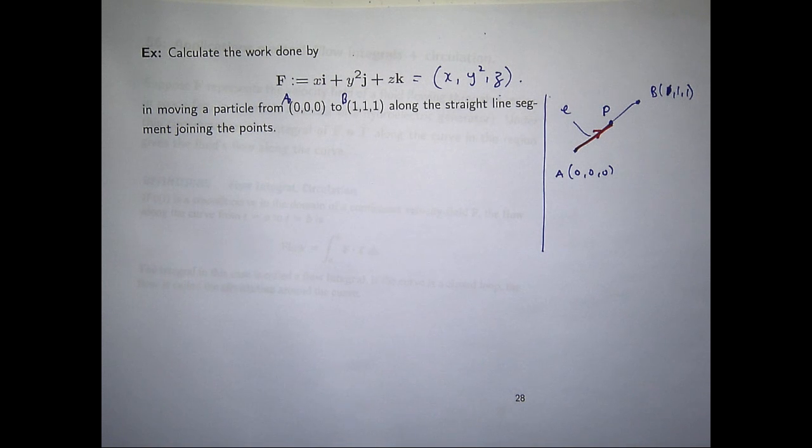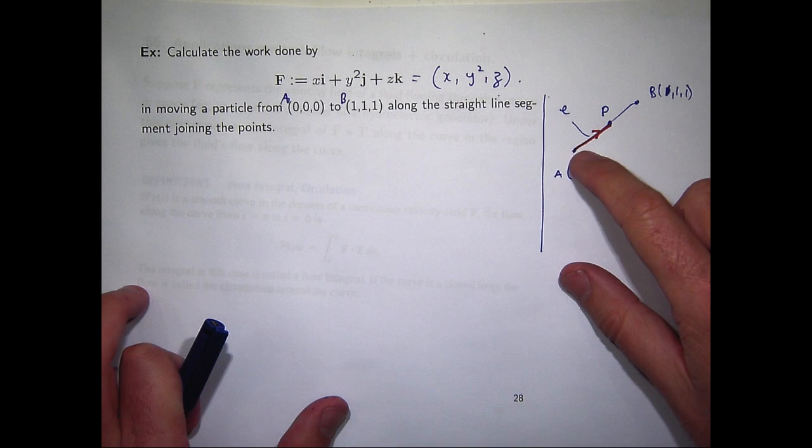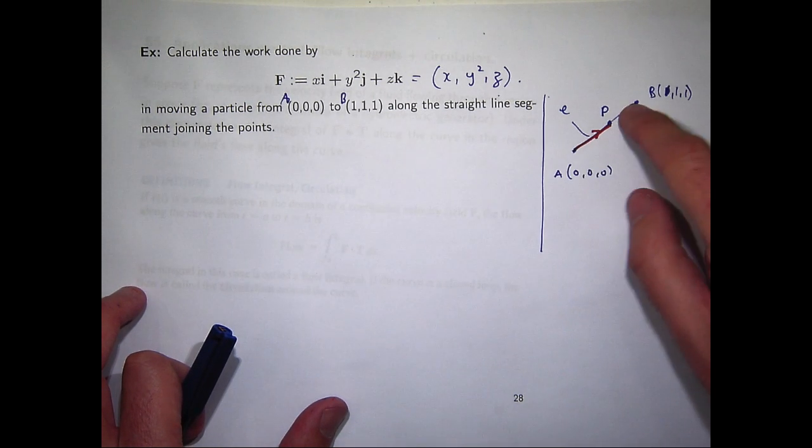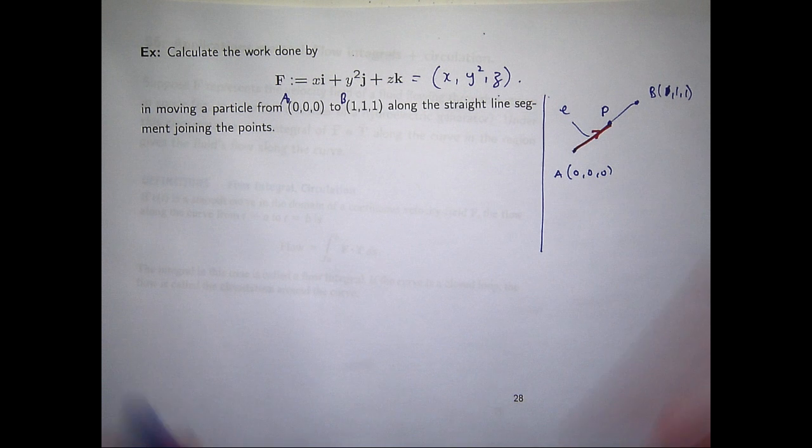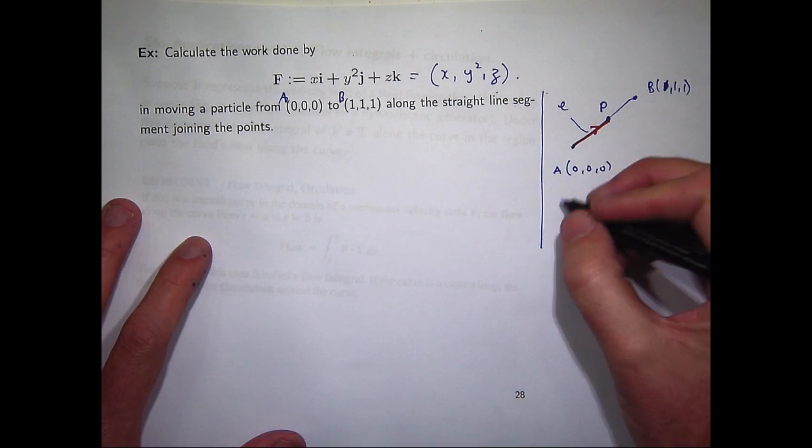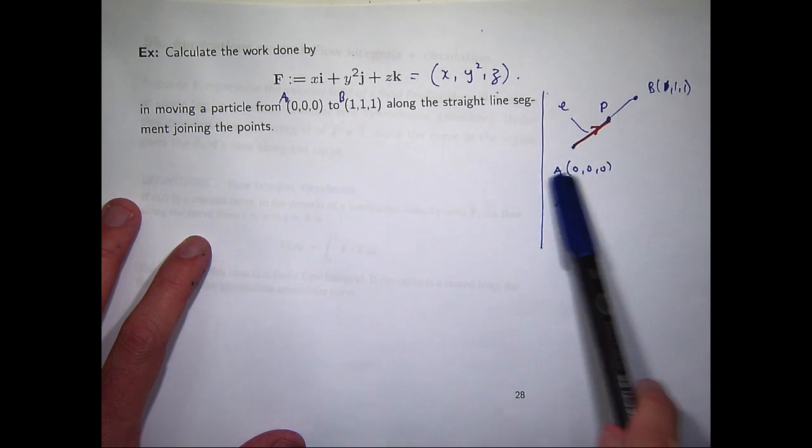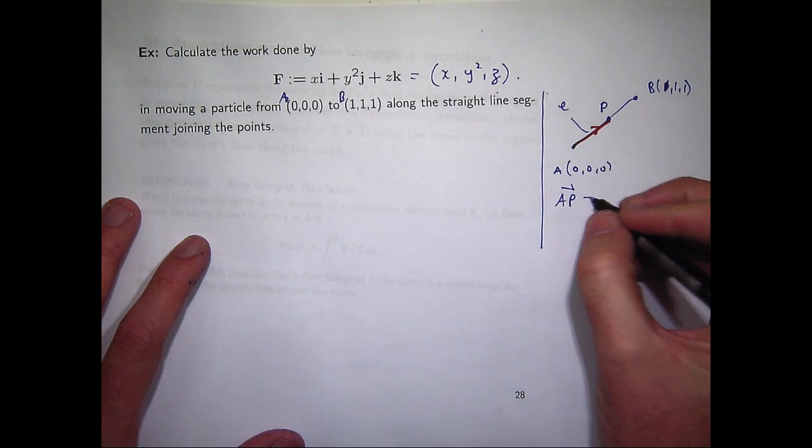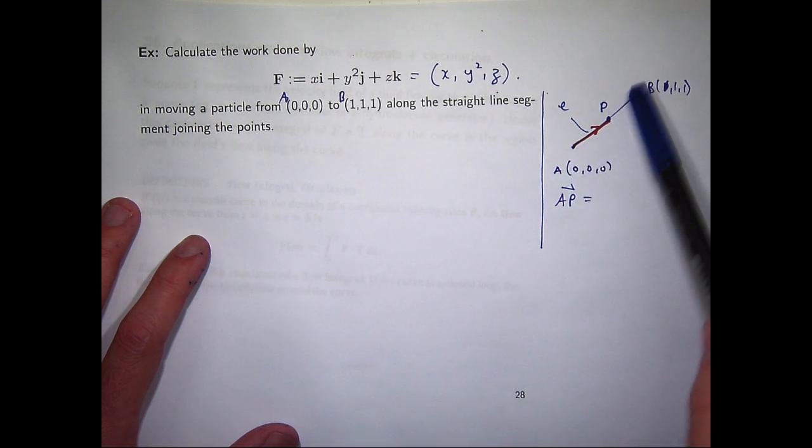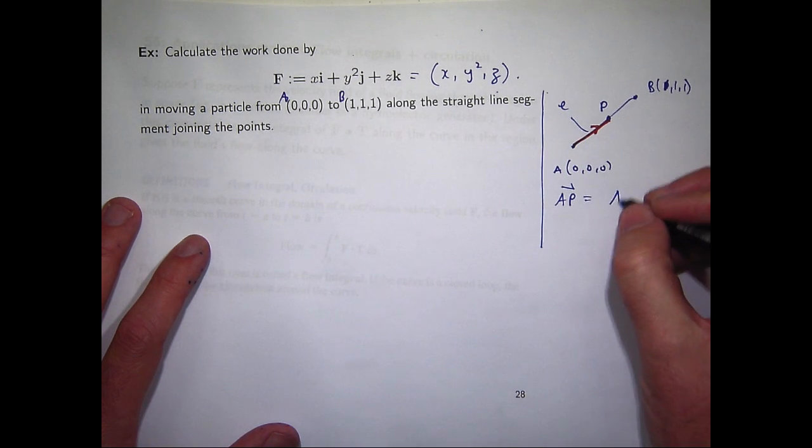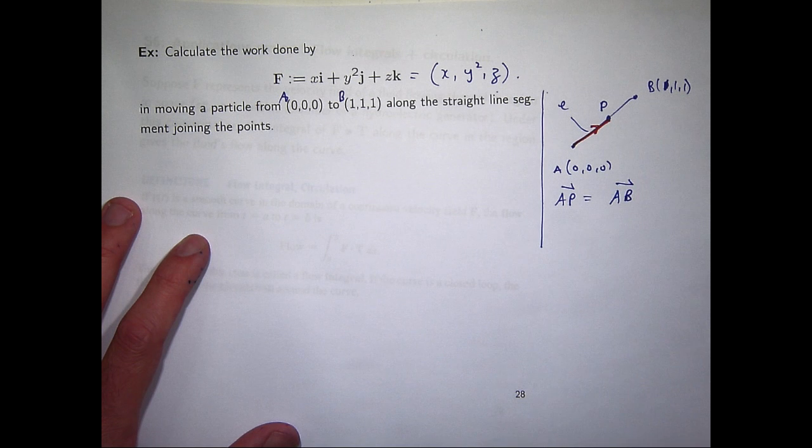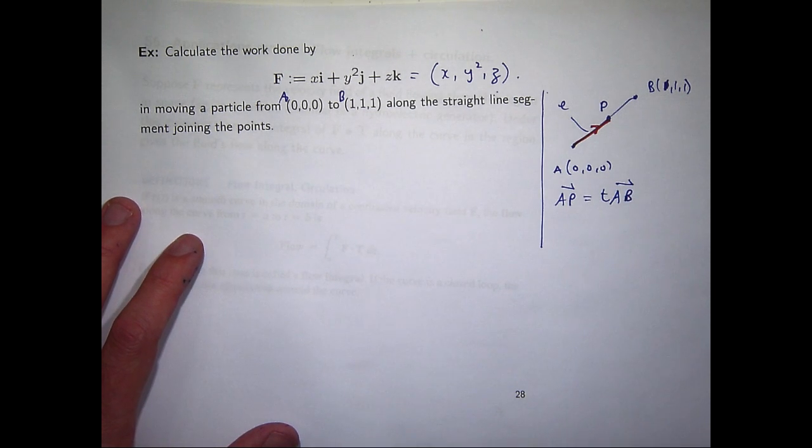So it's just parallel to the line and we know the vector AB. The vector AB is easy to calculate. It's the vector 1, 1, 1. But we don't want anything more than the line segment AB. So, essentially, using this A here for the origin, AP, it's going to be a multiple of the vector AB.